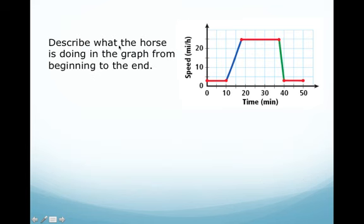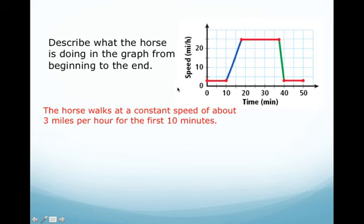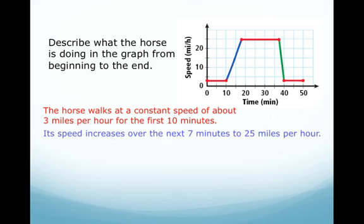Describe what the horse is doing in the graph from the beginning to end. So the red line represents the horse walks at a constant speed of about 3 miles per hour for 10 minutes. The blue line represents the horse's speed increasing over the next seven to eight minutes to 25 miles per hour.